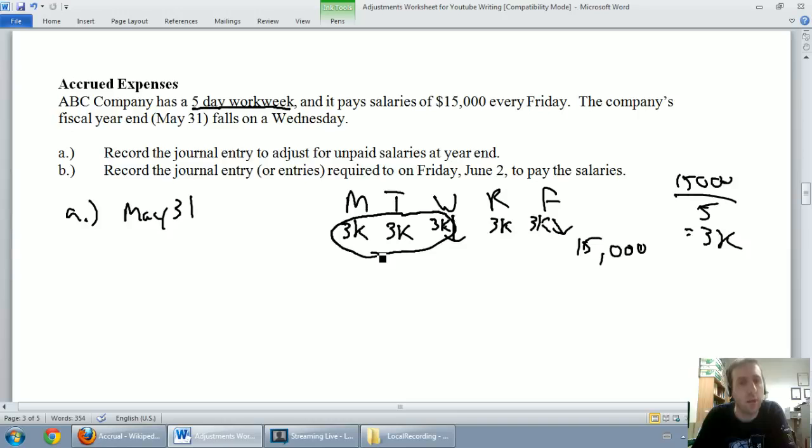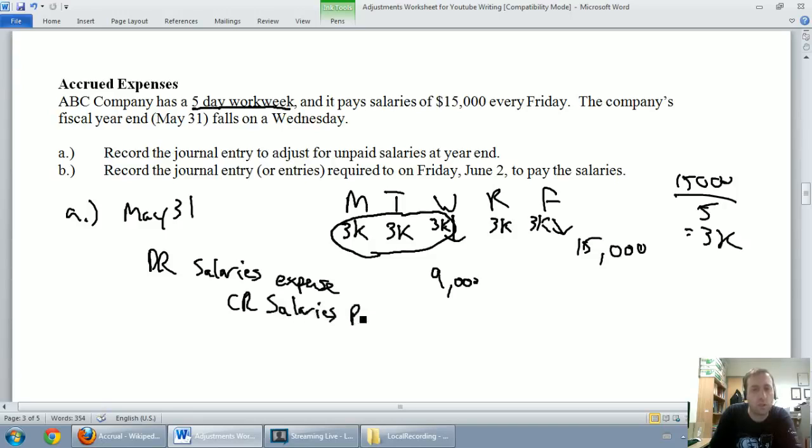Our journal entry here is pretty simple. What's the expense? Well, it's a salaries expense, so we're going to debit salaries expense for $9,000. We're going to credit, and this is a tricky one, it's always going to be a payable. We want a payable related to the expense, so often it's accounts payable, might be interest payable. In this case it's salaries payable for $9,000. We've done our adjusting journal entry - debit salaries expense, credit salaries payable.